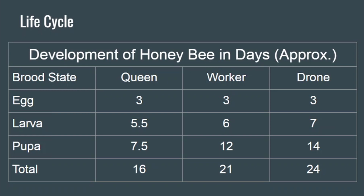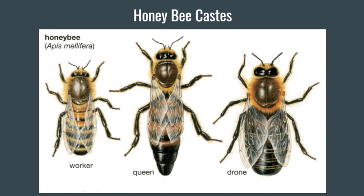Here we see a picture of the three honeybee castes. The most familiar is the leftmost one — the worker — the bee you see most often. In the middle is the queen: she's longer and more slender than the drone, and her face and thorax look very similar to the worker's, which we'll get into later.